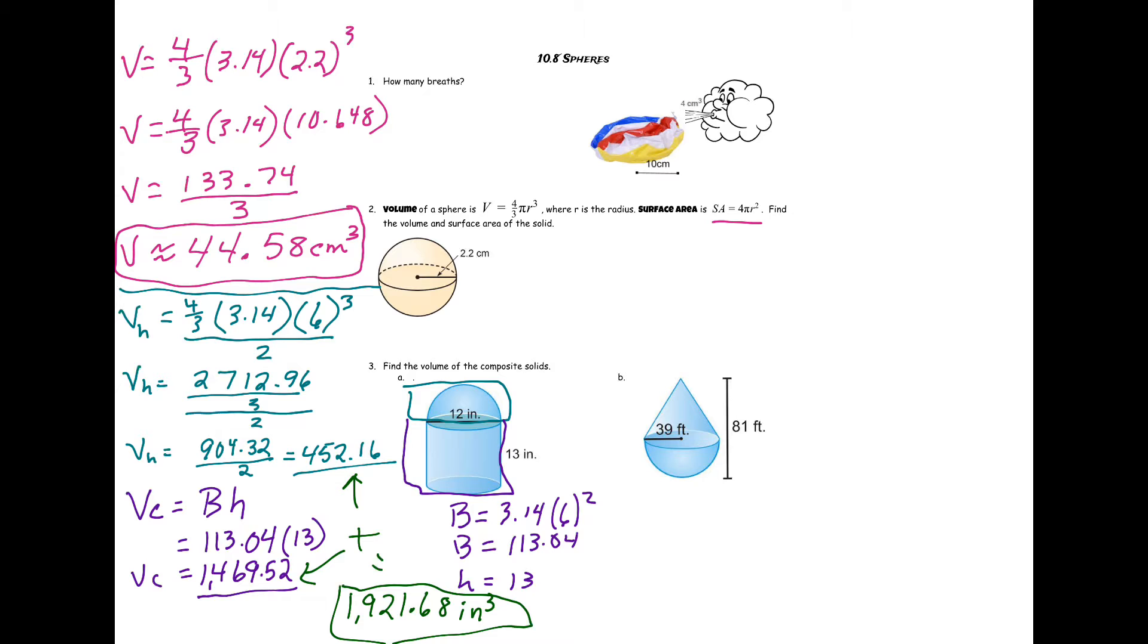So we got number two here to do. Surface area is equal to 4 pi r squared, and then just plug in the information we know. So 4 times 3.14 times our radius, 2.2 squared.